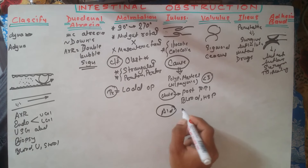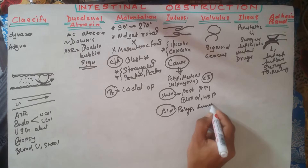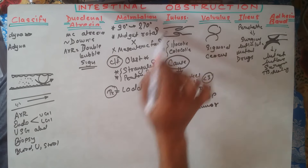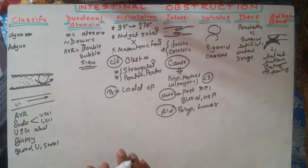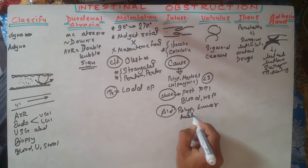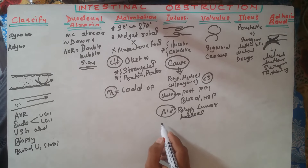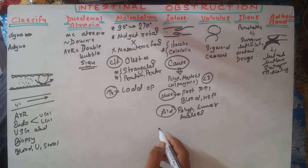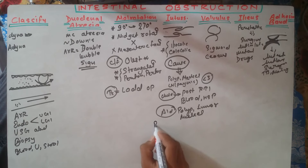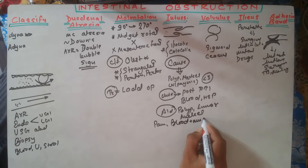In children over three years, intussusception usually follows respiratory tract infection. There can also be blood abnormalities like Henoch-Schönlein purpura. In adults, it usually presents post polyp or tumor. The key word is that intussusception is post to any other cause of intestinal obstruction. Presentation includes pain and blood-mucus mixed in stool, resembling red currant jelly.